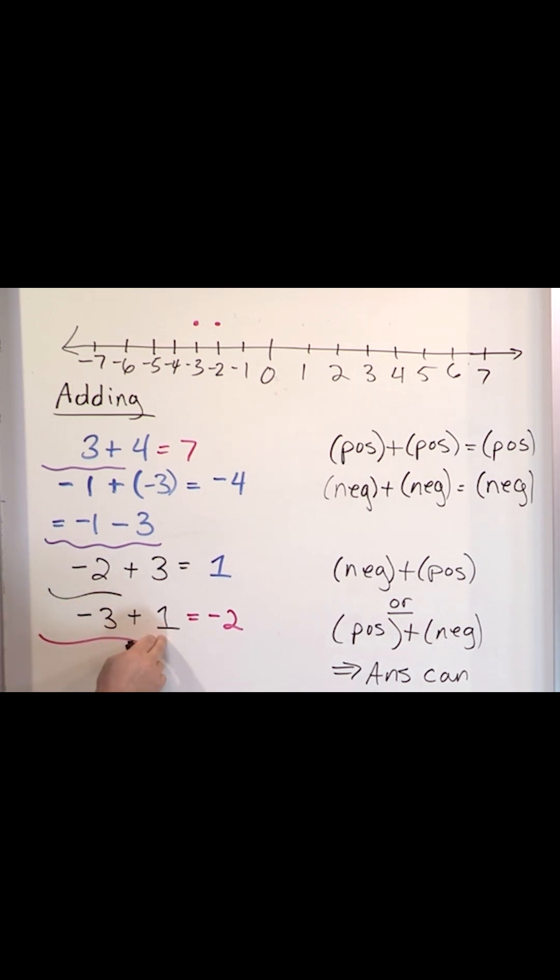So 3, forget about the sign here, 3 minus 2. 3 minus 1 is 2. So the number part of the answer is 2.